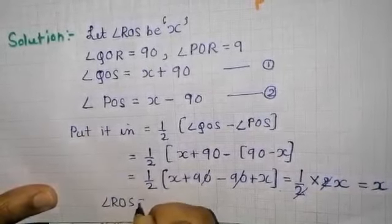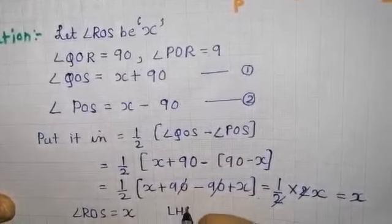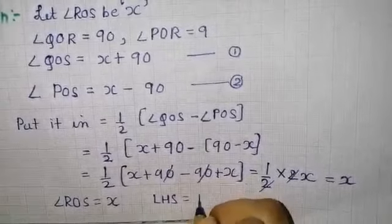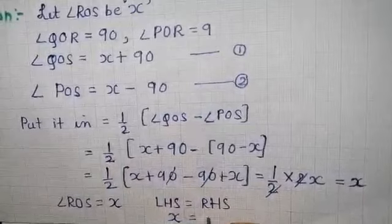So we got ∠ROS equals x, which is what we considered. LHS is ∠ROS which is x, and RHS is also x which we just got. This is really a sure question that can come in your exam and it's very important.